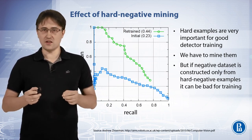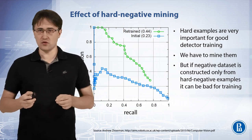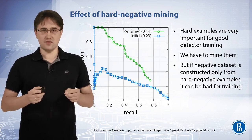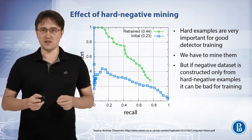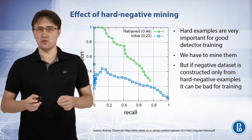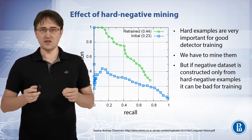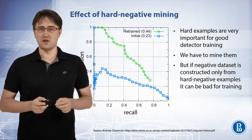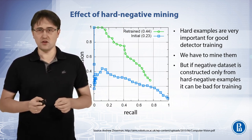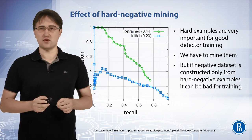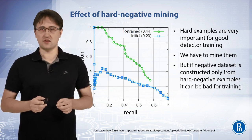Hard examples are very important for good detector training. But if the negative dataset is constructed only from hard negative examples, it can degrade performance. So we usually need both easy and hard examples for training of the detector.